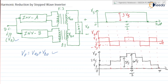Inverter A is operated such that at this instant we are going to turn on switches S1 and S2, and similarly at this instant we are going to turn off switches S1 and S2. This is shown for only the first half cycle — the positive half cycle. The same way, we can get the output voltage for the negative half cycle as well, by operating the particular switches from inverter A and inverter B.